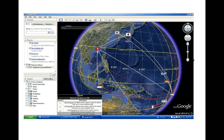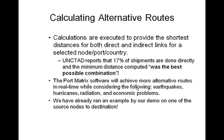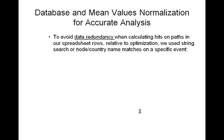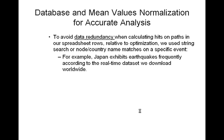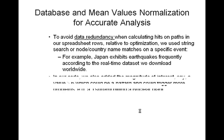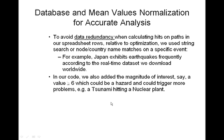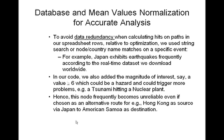This is an example for Hong Kong showing its alternative paths in white against traditional directed paths in red, connected to destination node American Samoa. We have already run a demo example with Australia as source node and American Samoa as destination. To avoid data redundancy when calculating hits on paths in our spreadsheet rows, we used string search or node country name matches on a specific event. For example, Japan exhibits earthquakes frequently according to the real-time dataset downloaded worldwide. In our code, we added magnitude of interest — a value greater than 6 would be a hazard — which could trigger further problems, such as a tsunami hitting a nuclear plant, making that node unreliable even if chosen as an alternative route — for example, Hong Kong via Japan to American Samoa.